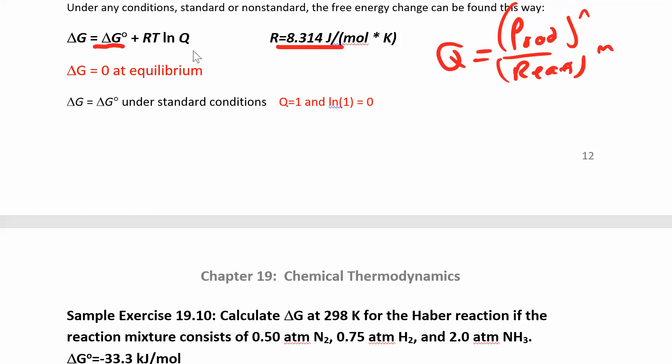If you're under standard conditions then Q is just going to equal one, because all your pressures are one or all your concentrations are one. So one divided by one raised to whatever is just going to give you one. Natural log of one is just zero. And so this whole term will just cancel out and delta G is just equal to delta G naught. At equilibrium, delta G is equal to zero.